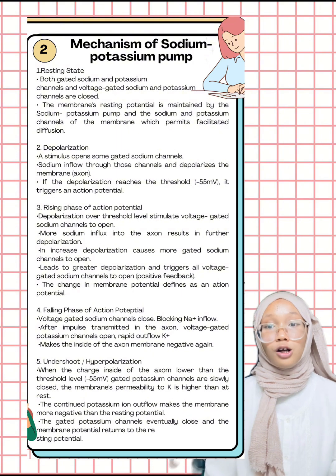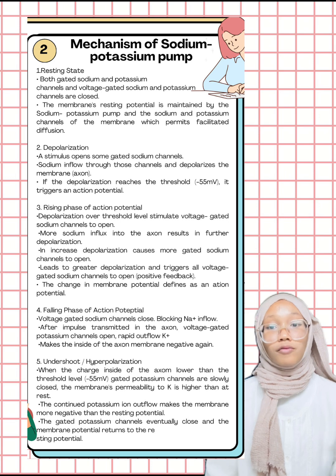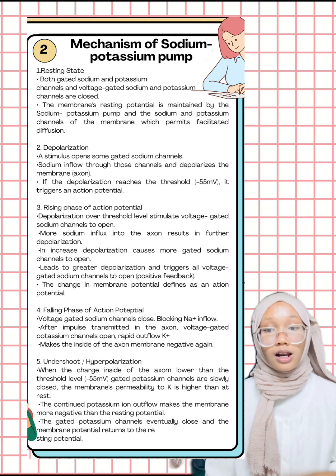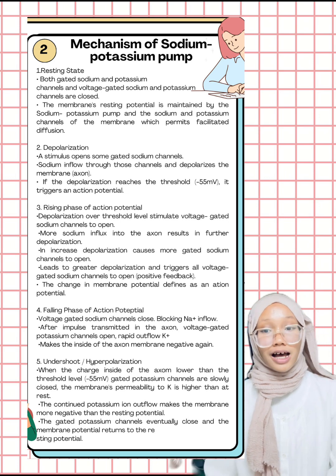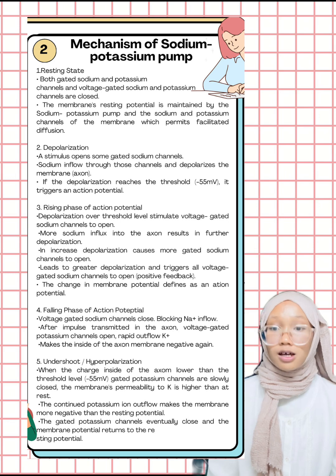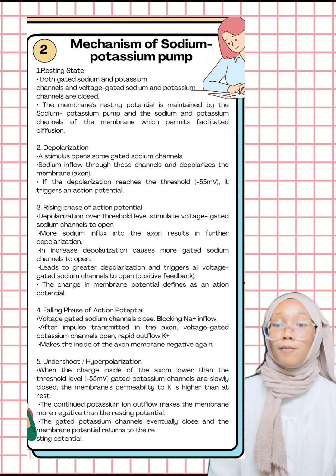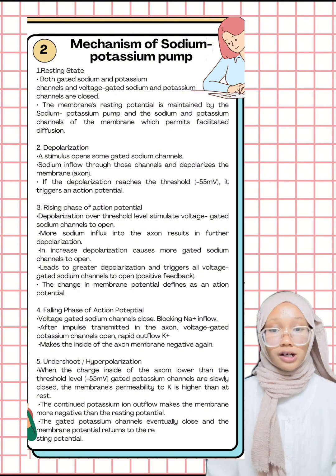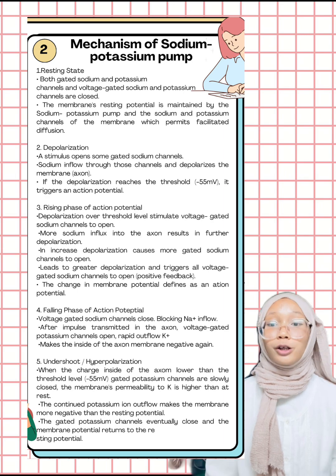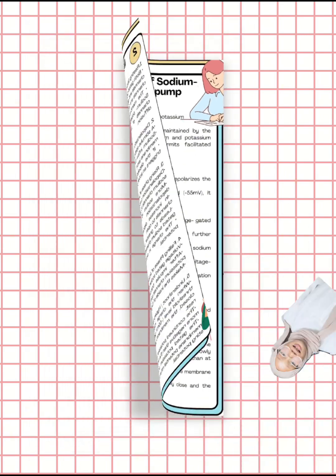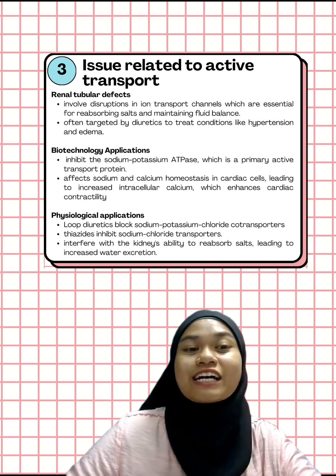The depolarization peaks at about positive 30 mV. Shortly after, voltage-gated sodium channels close while potassium channels open, allowing potassium ions to flow out and repolarize the membrane. During the undershoot or hyperpolarization phase, potassium channels close slowly, causing the membrane potential to briefly become more negative than the resting potential. Finally, the sodium-potassium pump restores the resting potential, preparing the neuron for the next action potential.